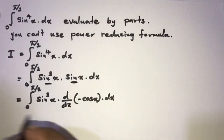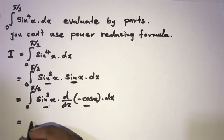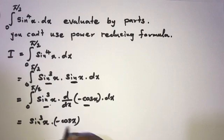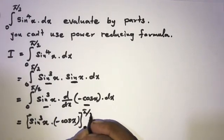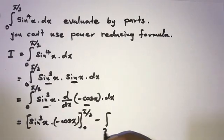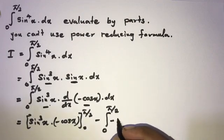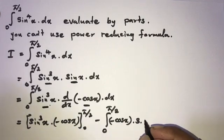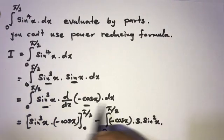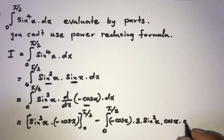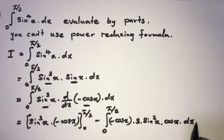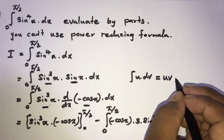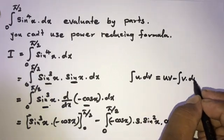So the product of these functions gives sine to the third power x times minus cos x, evaluated from 0 to 5π/2, minus an integral from 0 to 5π/2. Then rewrite this function as minus cos x, and the derivative of the first function: 3 times sine squared x — and by the chain rule, the derivative of sine x is cos x dx. You can use the integration by parts formula u·dv = uv − ∫v du.